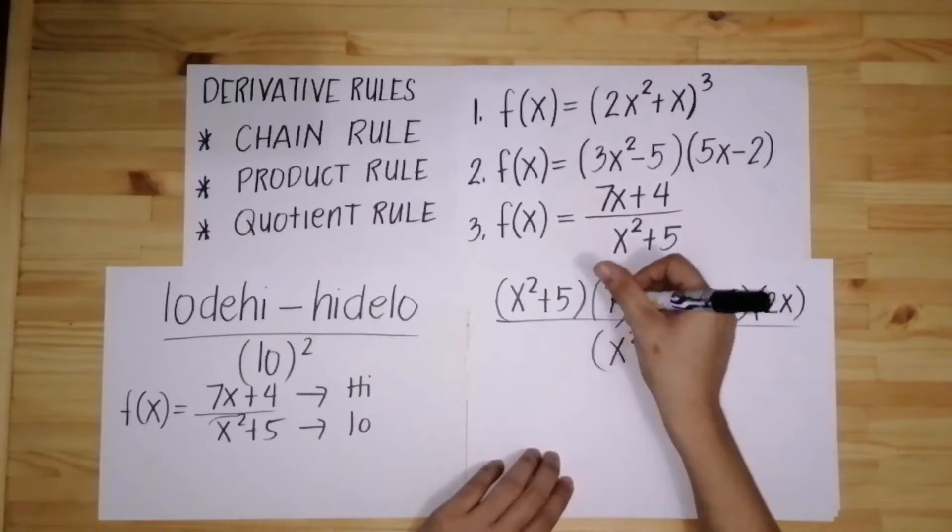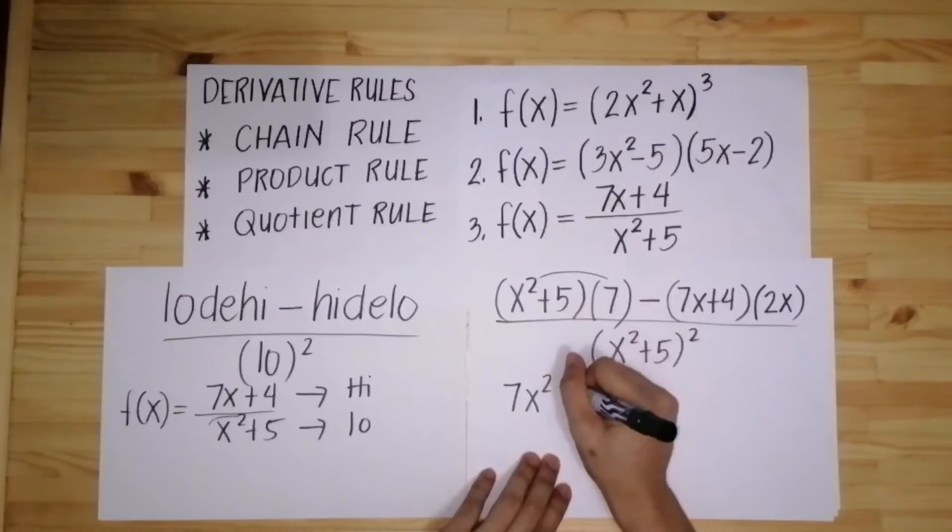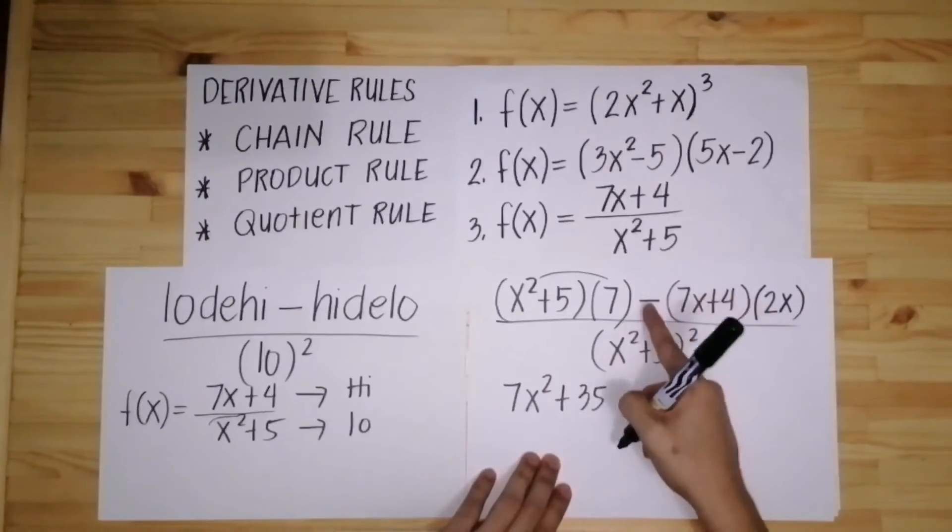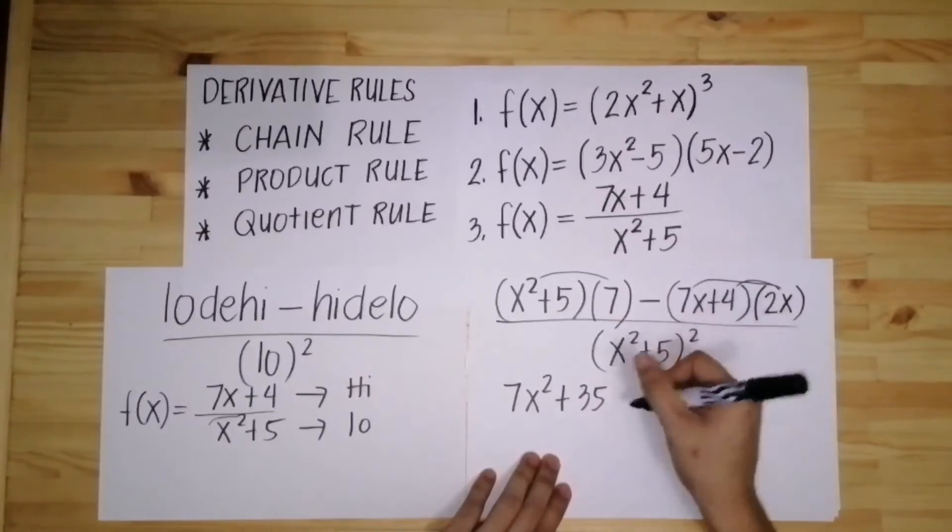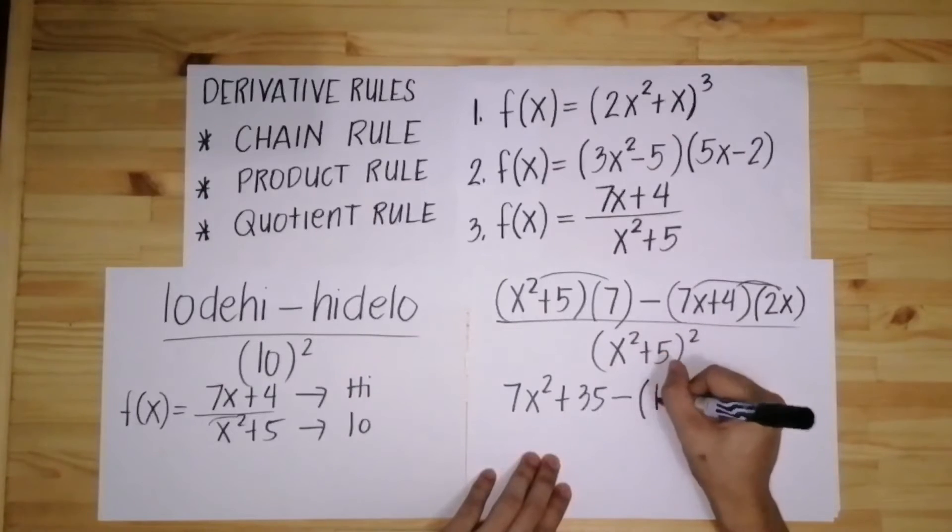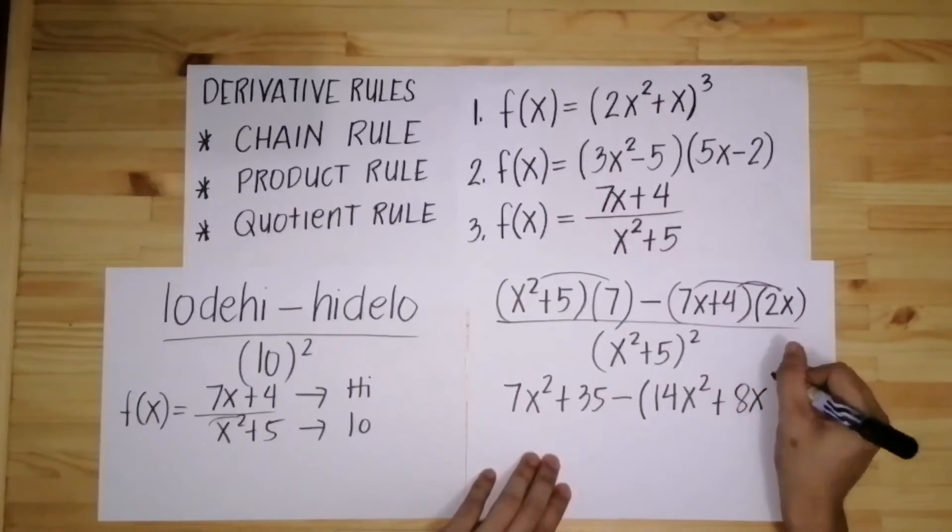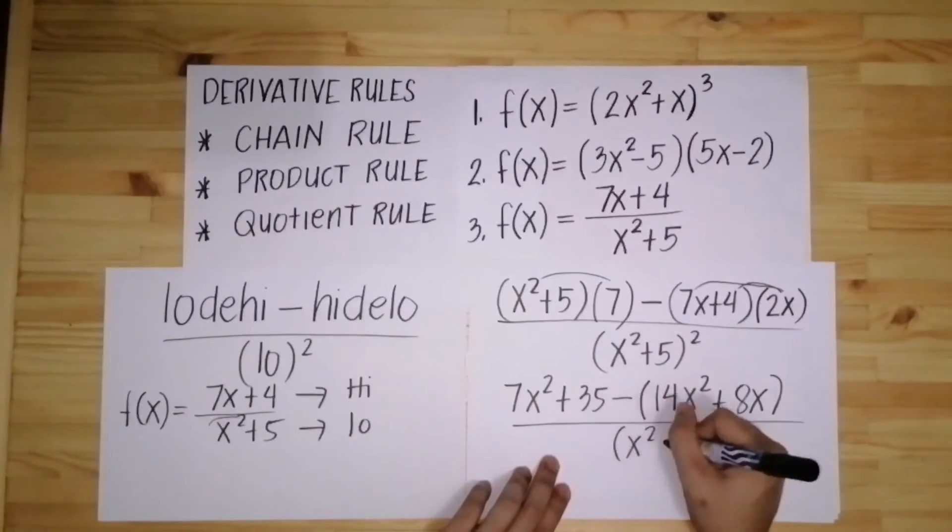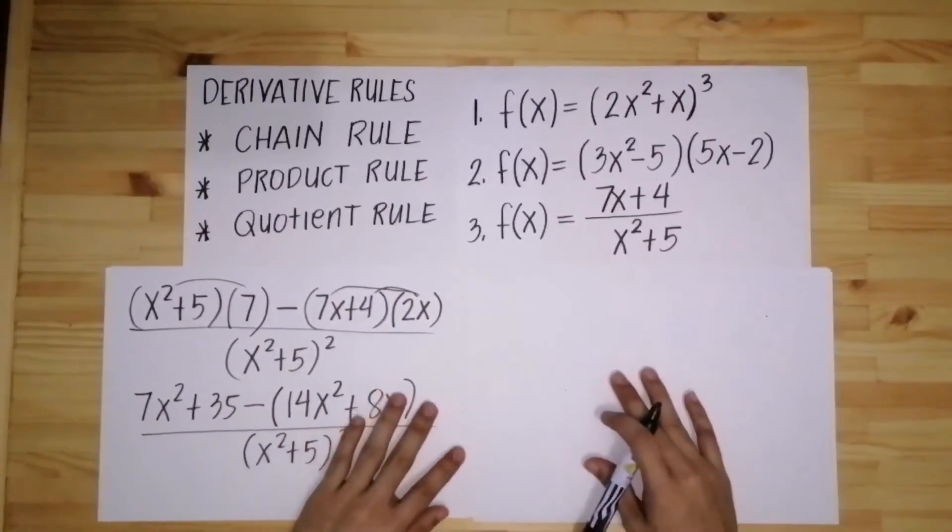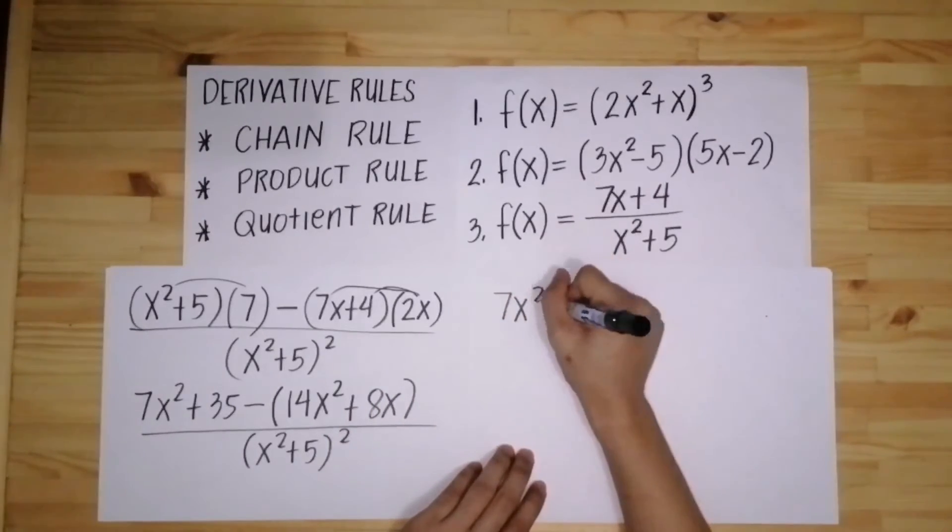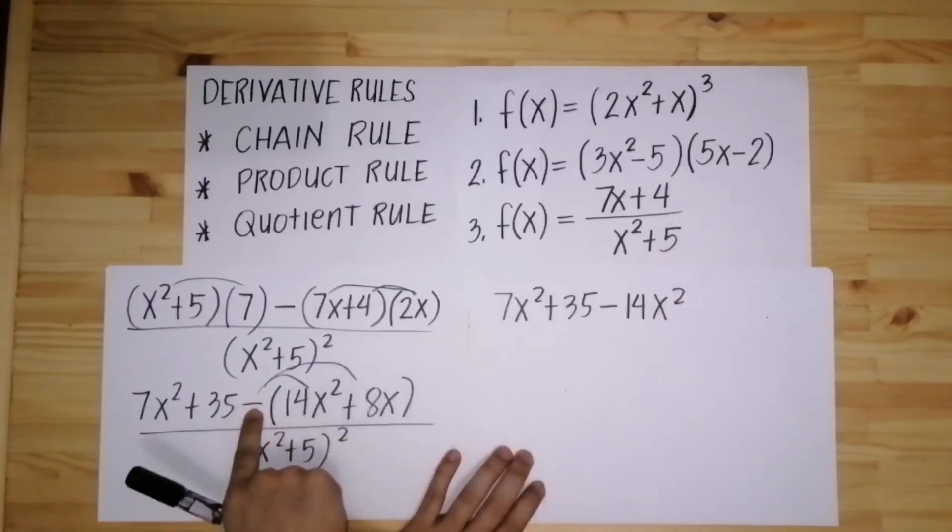Then i-distribute lang natin to, yung 7 sa parenthesis magiging 7x squared, then 7 times 5 plus 35. Then i-distribute tong 2x sa loob ng parenthesis. 2x times 7x, 14x squared, 2x times 4 is 8x. Then all over x squared plus 5 squared. Ito i-distribute lang natin magiging 7x squared plus 35. Distribute natin ito sa loob, minus 14x squared, negative times positive is negative, minus 8x.